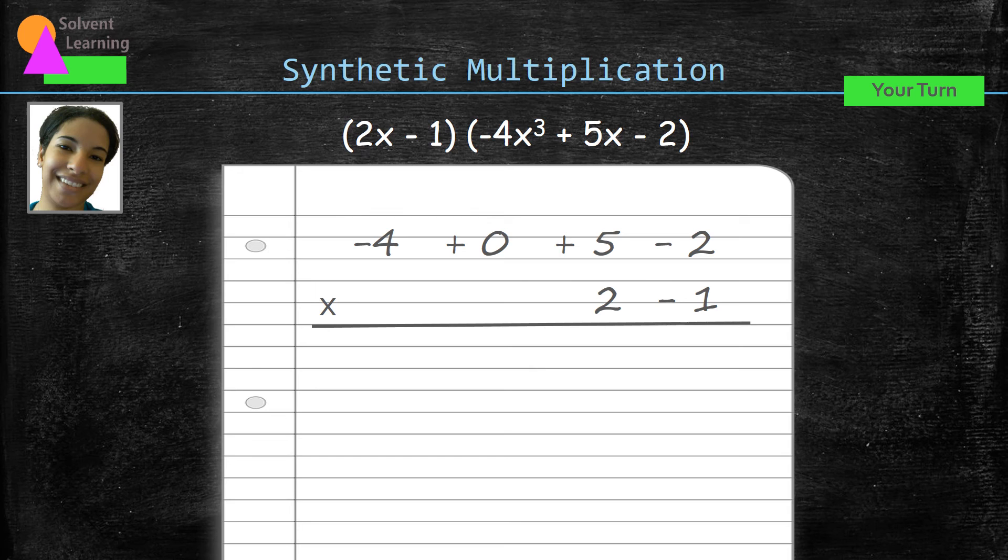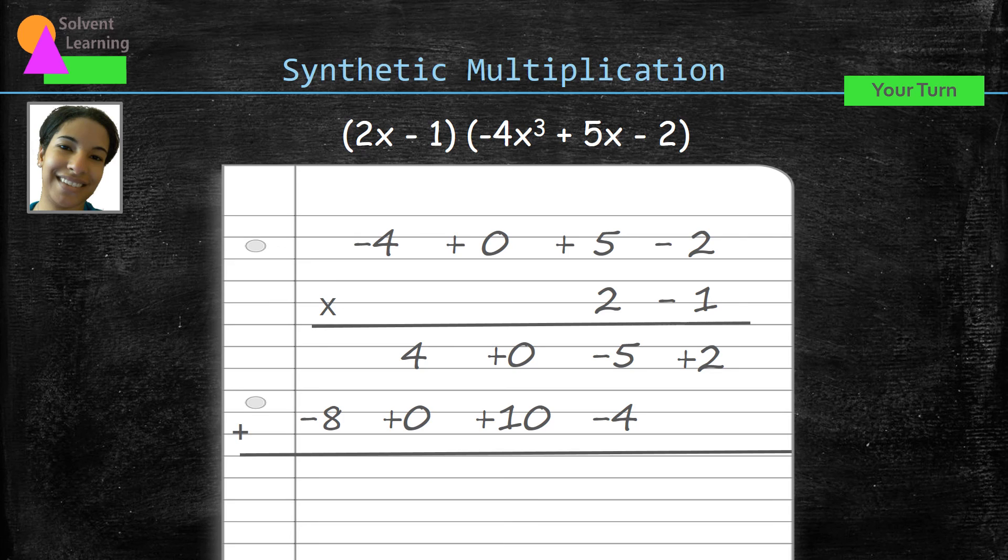First we'll start multiplying that negative 1 in the second row times each term from the first polynomial. Now we multiply the 2 times each term in the first polynomial.